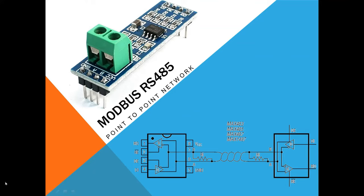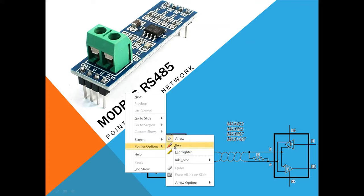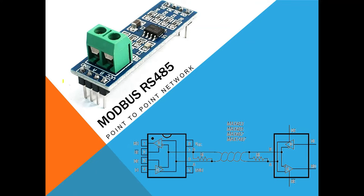Hello everyone, welcome again. In this tutorial we will talk about the Modbus module or the RS-485 module. This module is a converter — it will convert from TTL logic, which can be connected to any embedded system like PIC, Arduino, or any other MCU, and it gives us connectivity to RS-485 or Modbus. In this tutorial we will talk about point-to-point network.